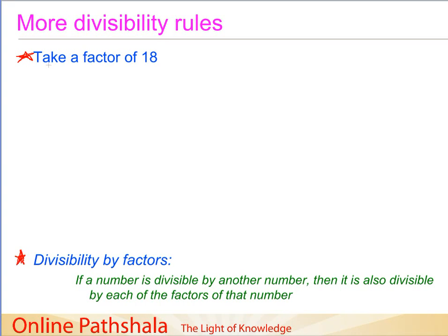In this lecture we are going to discuss some more divisibility rules which are based on our earlier discussions on the common factor. Let us write down the various factors for the number 18. The factors of 18 are 1, 2, 3, 6, 9, and 18.